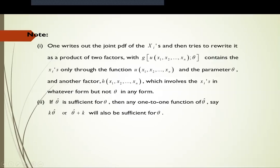If theta-hat is sufficient for theta, then any one-to-one function of theta-hat is also sufficient for theta. For example, if k(theta-hat) and theta-hat plus k are one-to-one functions, then k(theta-hat) is also sufficient for theta. So if theta-hat equals x-bar, and x-bar is already known as a sufficient statistic for theta, then since x-bar equals summation(xi) over n, the summation of xi is also a sufficient statistic.